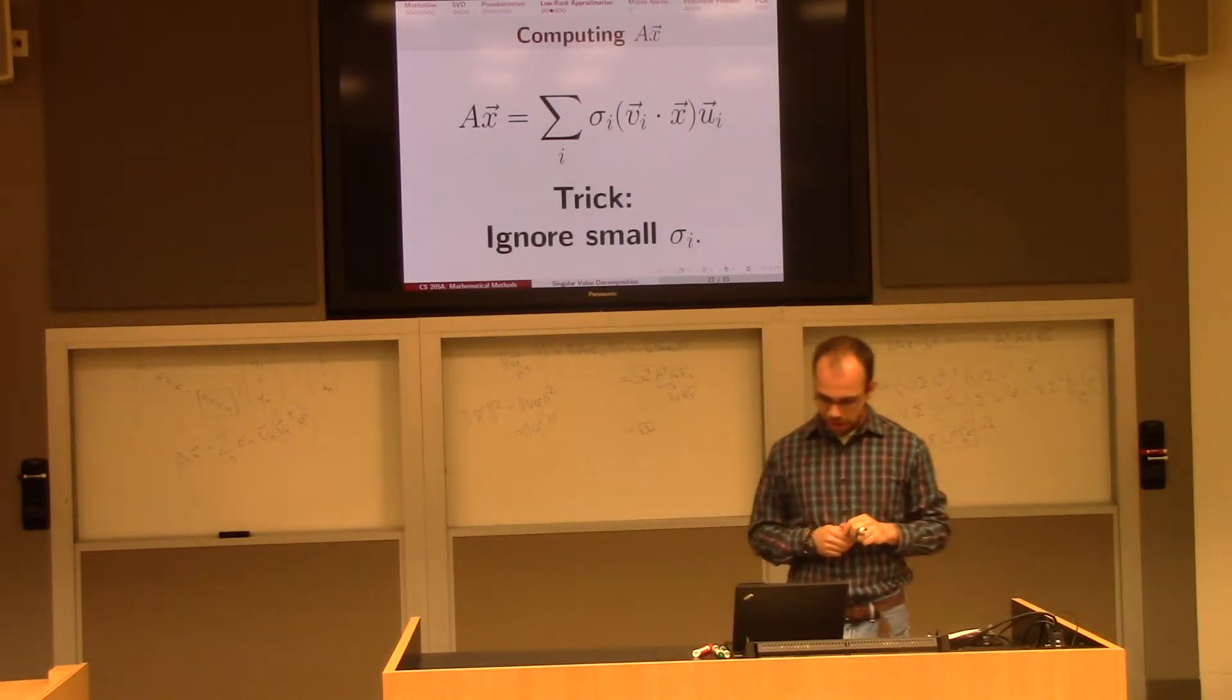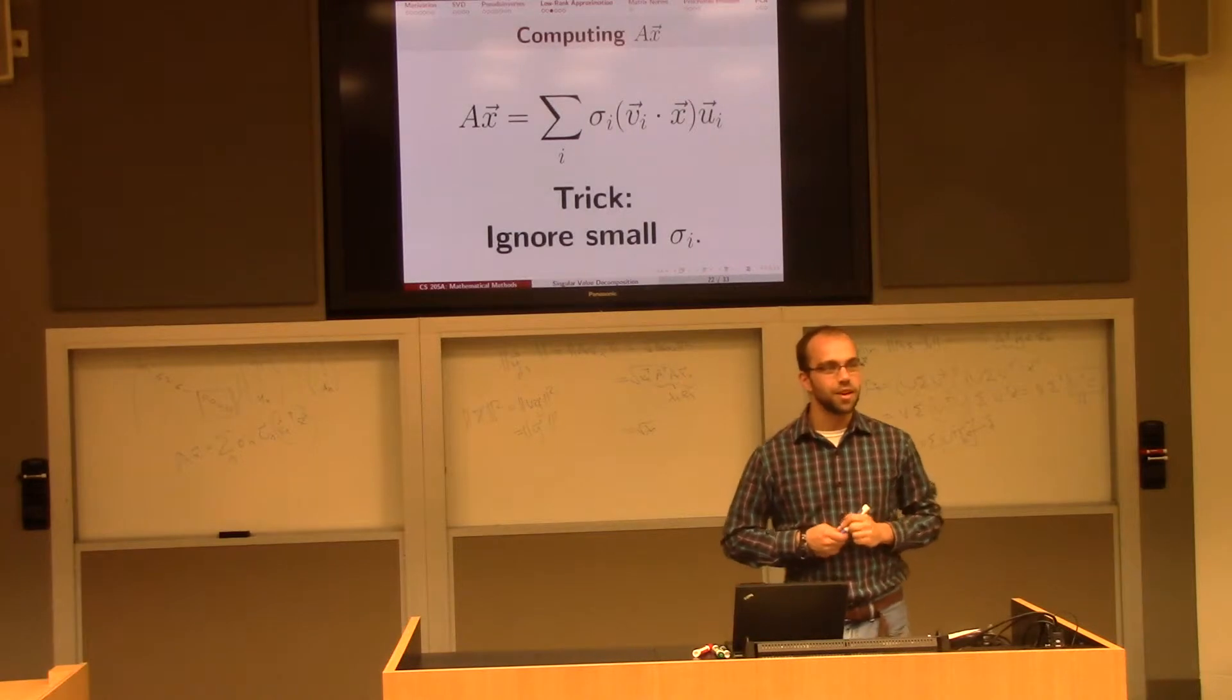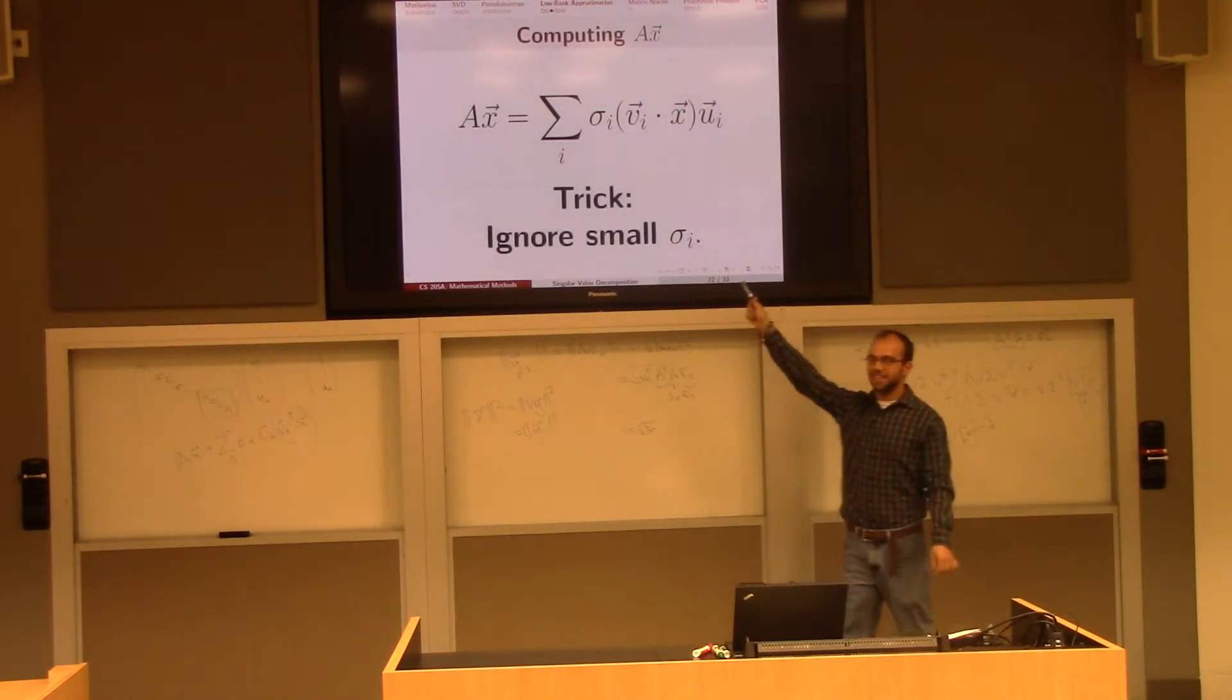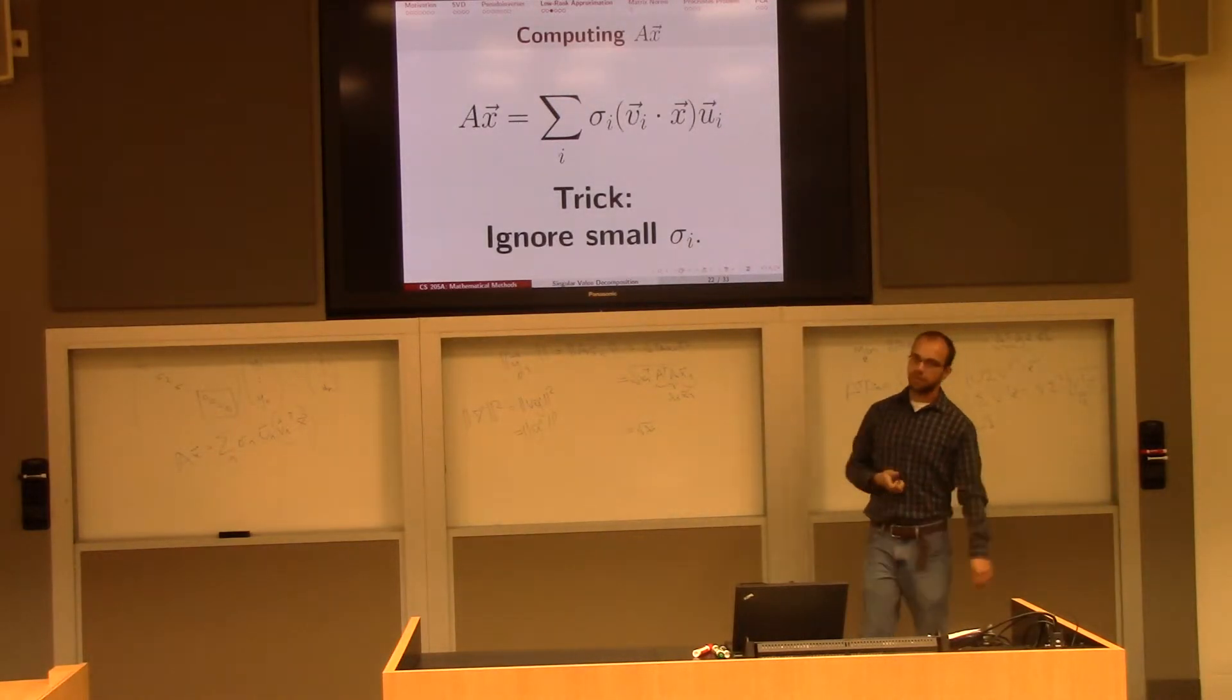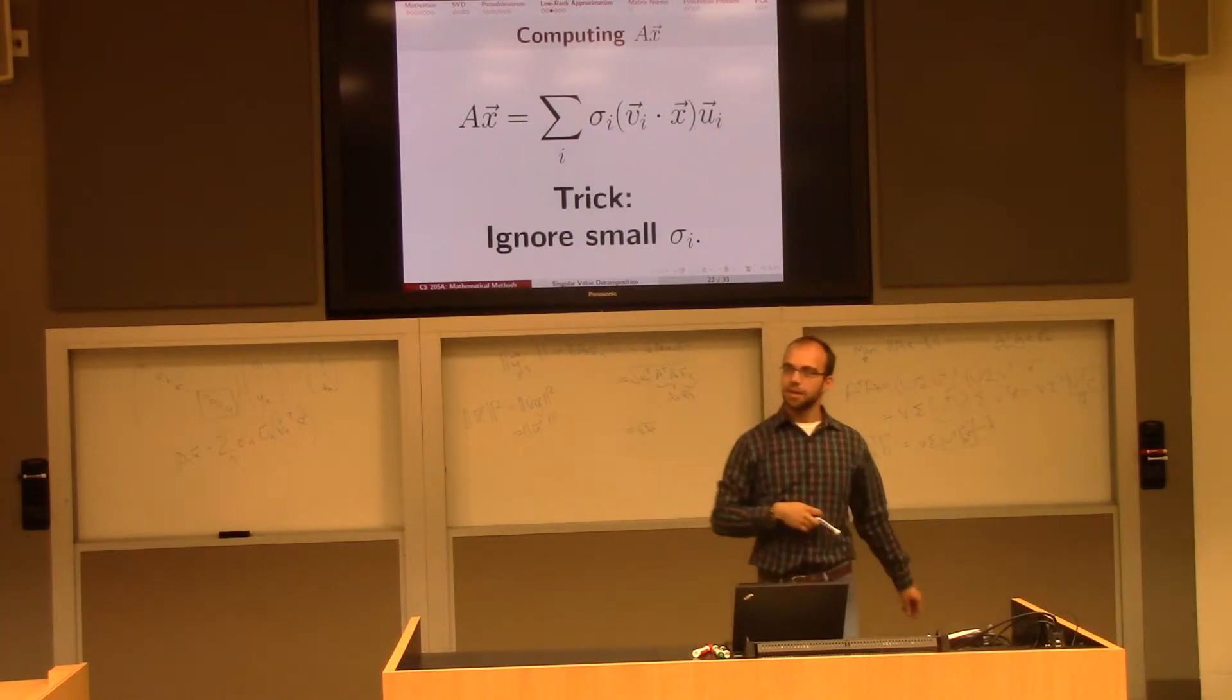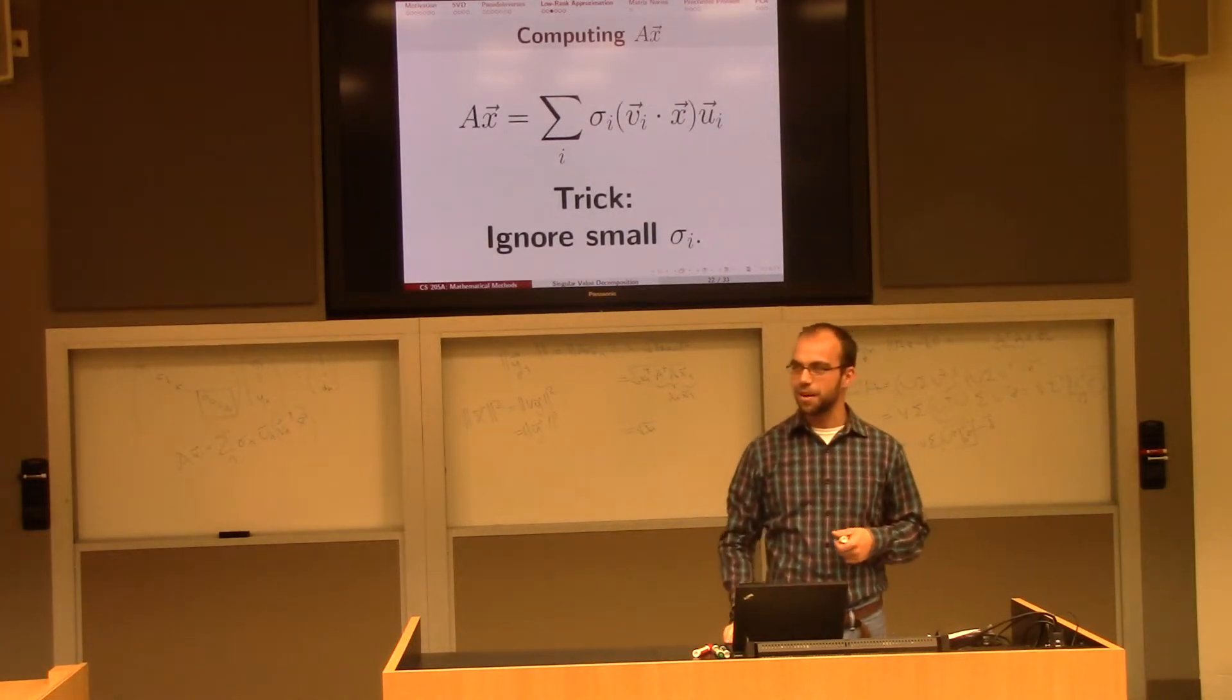So this gives us a nice way to compute a times x, because what can I do? Well, I know that if sigma i is small, it doesn't contribute a heck of a lot to this sum. So maybe I just zero them out. So one way to find the product ax is just to evaluate the sum, but only use the i's for which sigma i is significantly big. Now this is probably overkill, because matrix vector multiplication is a pretty easy operation.